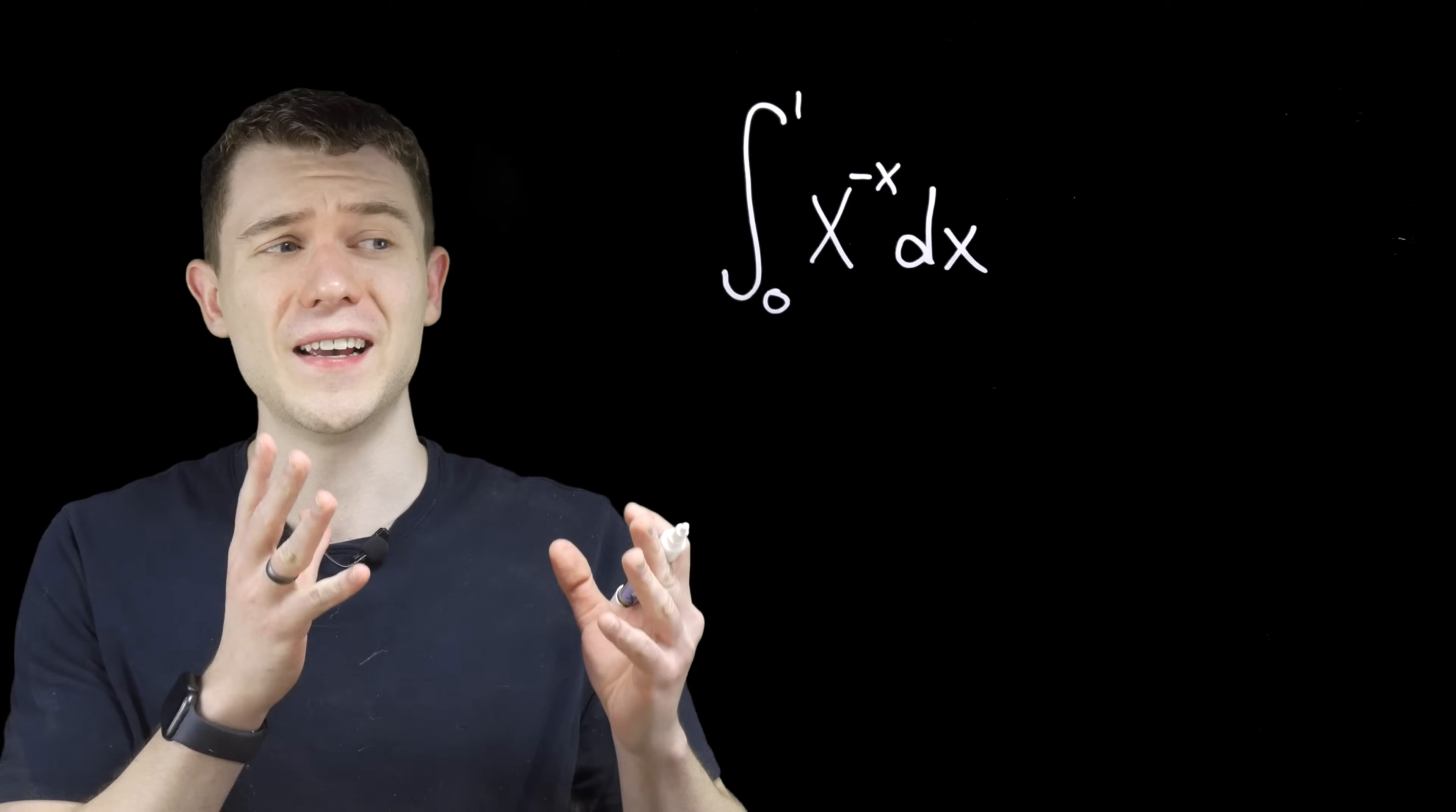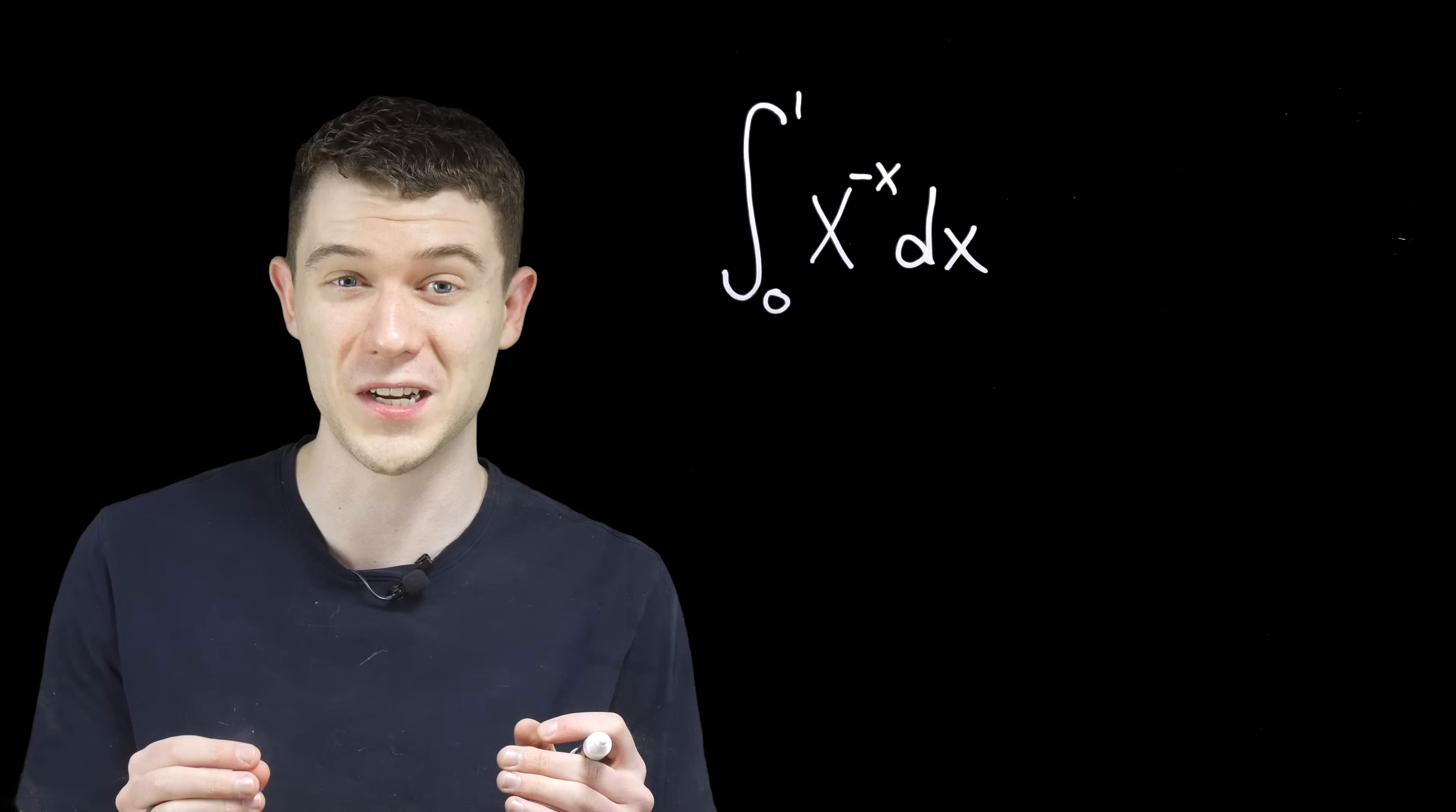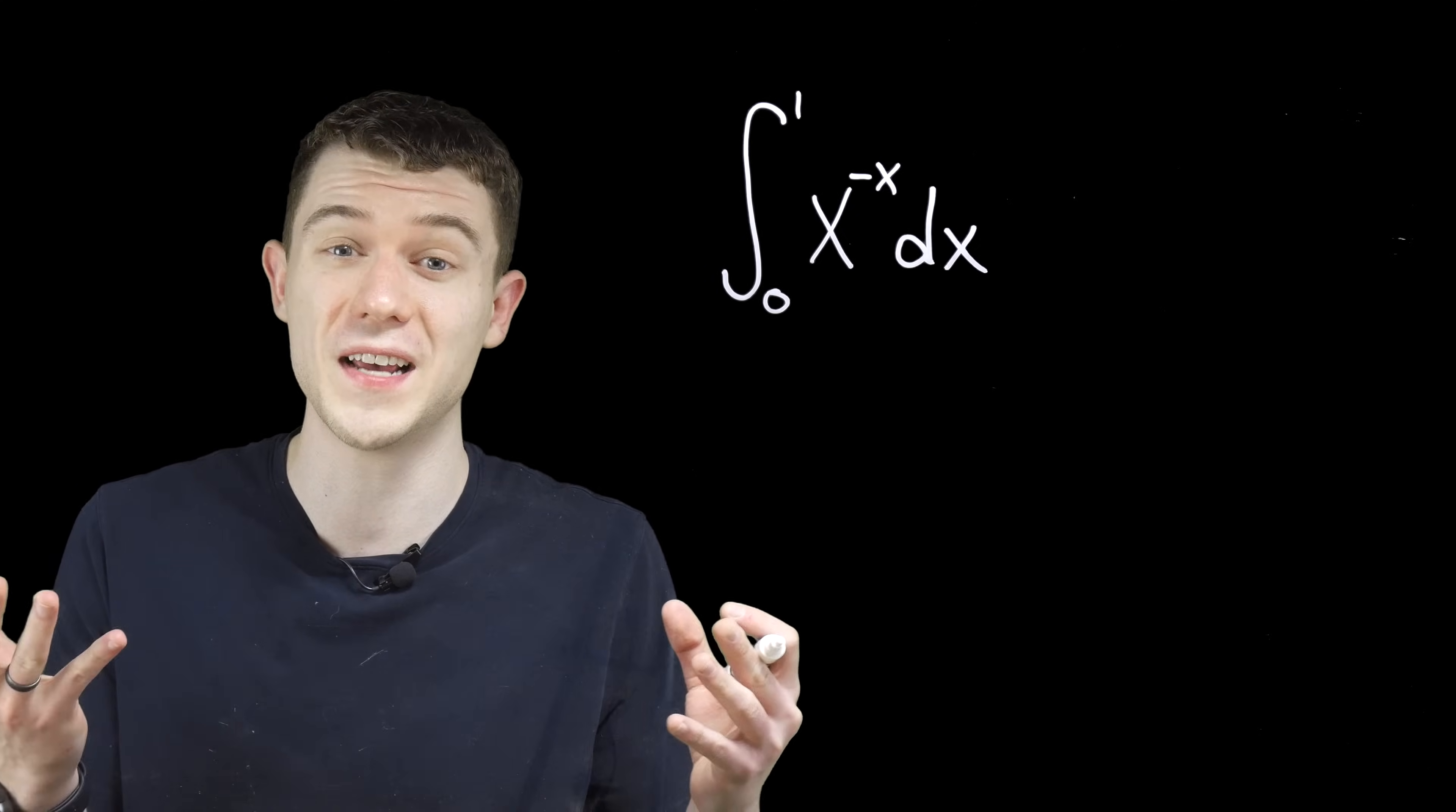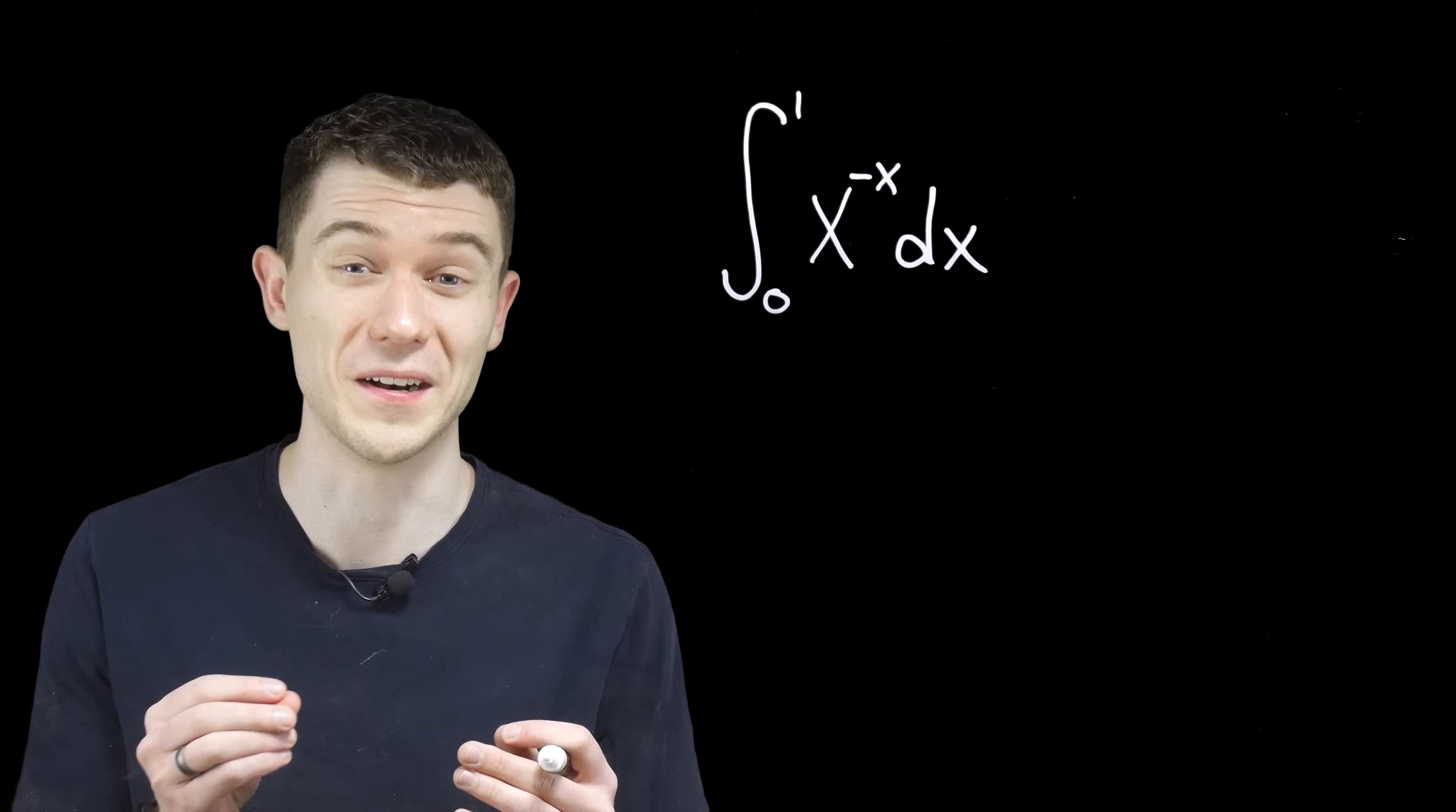Now just looking at it, x to the x power, or x to the minus x power, you know there's going to be a bit of trickery involved here. Think about just differentiating x to the x. We have to do logarithmic differentiation, an entire technique just to do it. So you know that anti-deriving this thing is going to come with a bit of work.